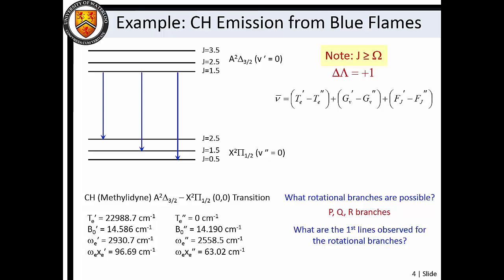The implication of this is that J is greater than or equal to omega, since in a rotationless molecule J equals omega. For this reason, the lowest J value for the doublet pi one-half ground state of CH is J equals 0.5, and the lowest J value for the excited doublet delta three-half state is J equals 1.5.